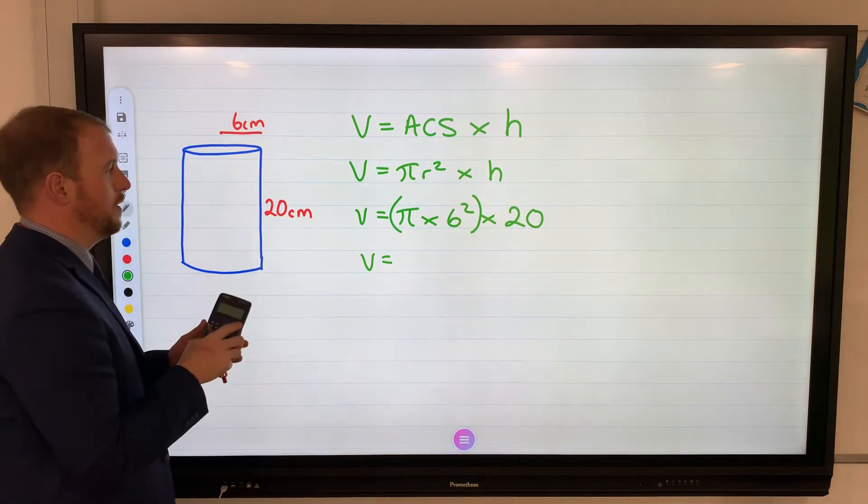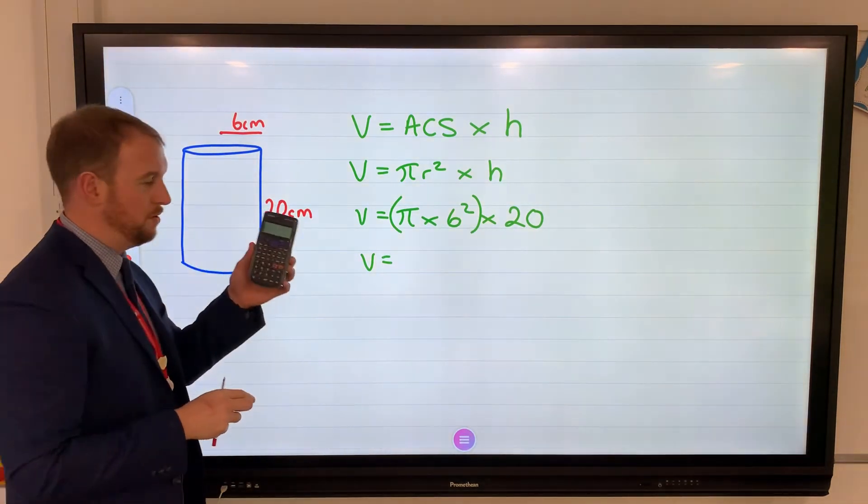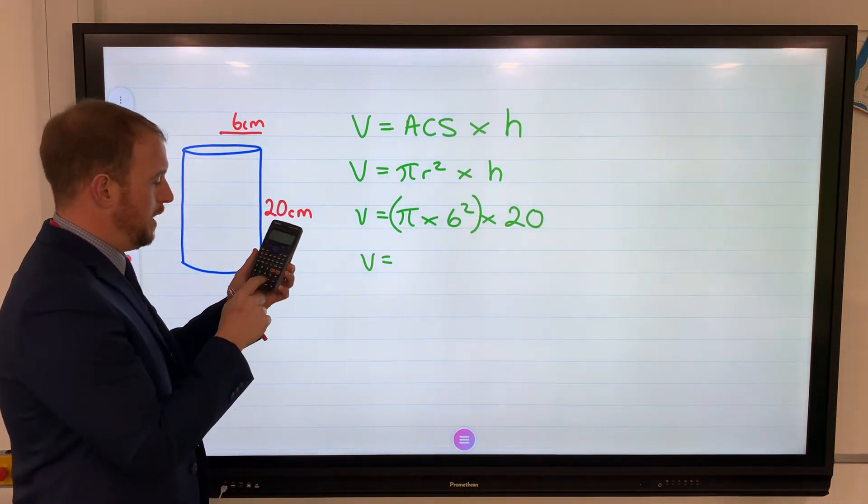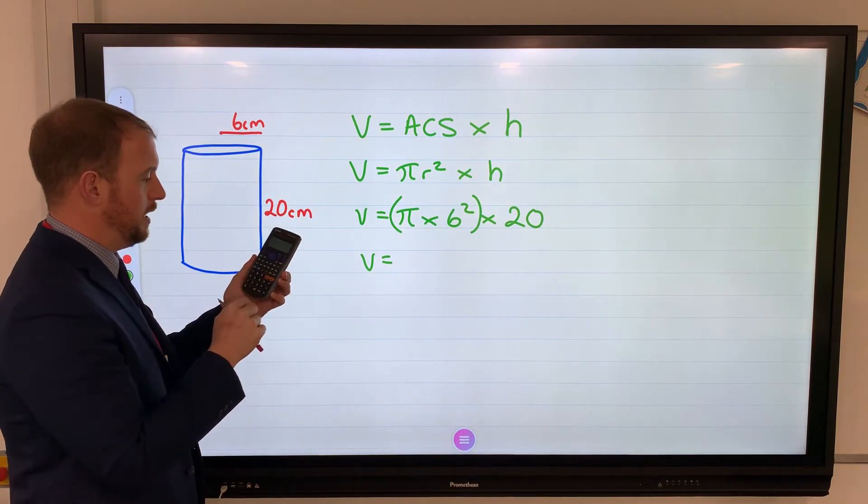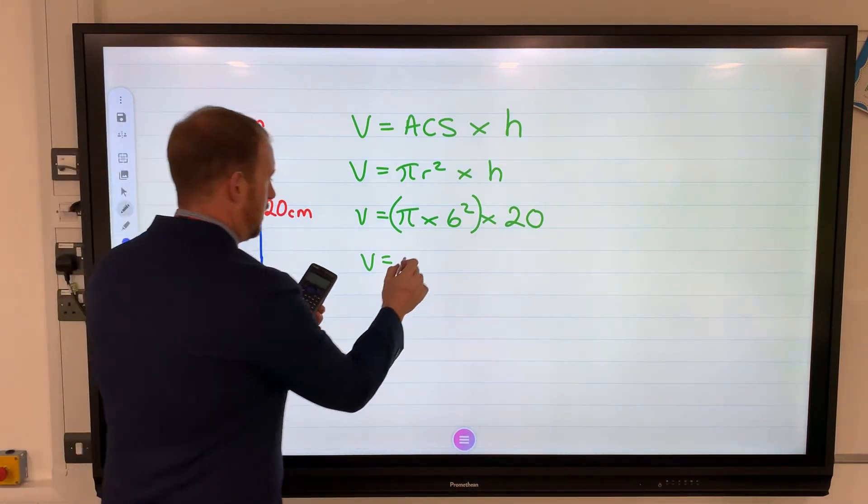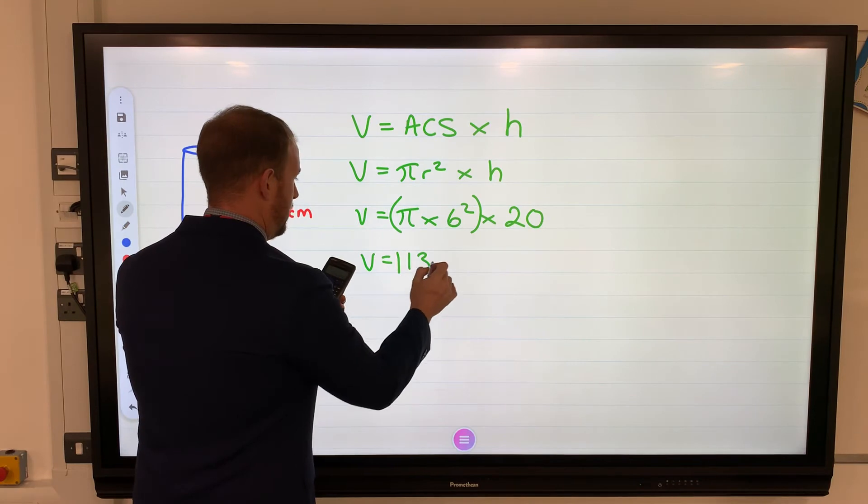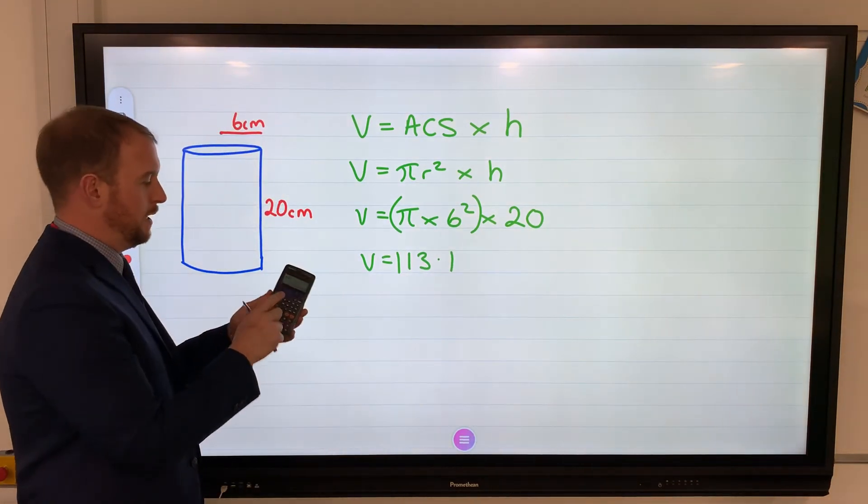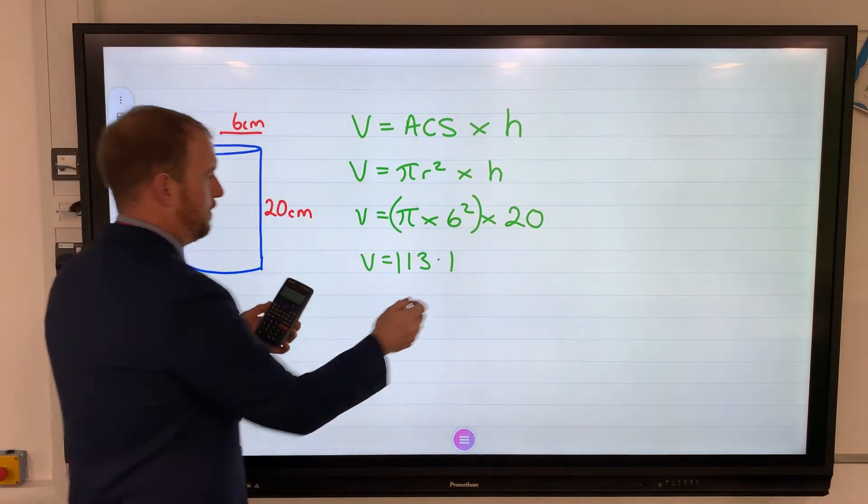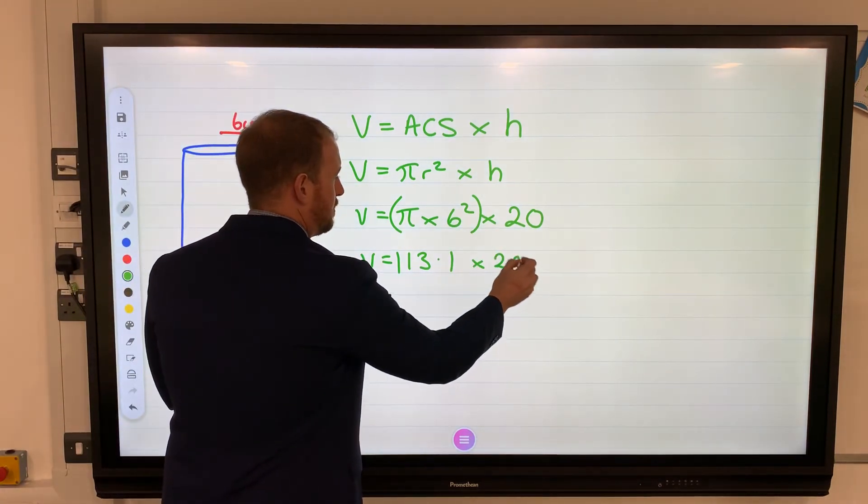So this part first. I'm going to use the calculator because anything to do with circles we're allowed to use a calculator. So pi times 6 squared equals, and I've got 113.1. I've rounded that to one decimal place.